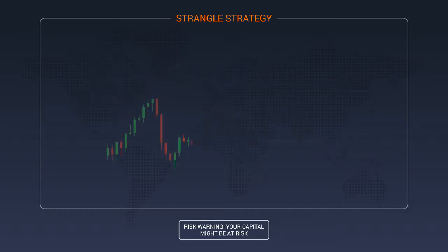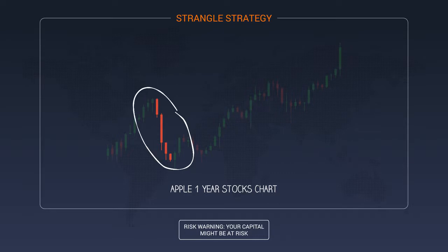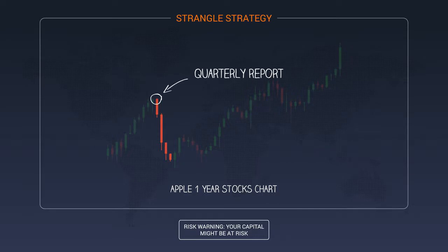Let's look at a historical example to see how it works. This is a chart of Apple stock over the past year. You can see several spikes that occurred after key events for the company, such as presentations of new products or the release of quarterly income statements.